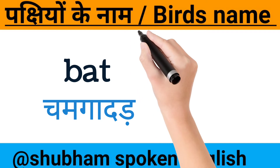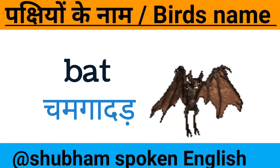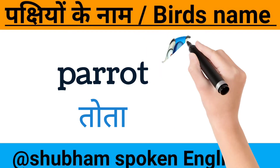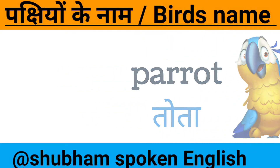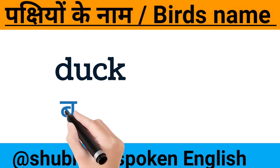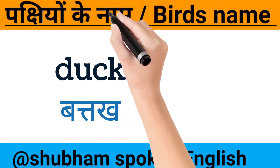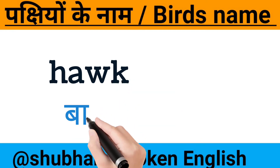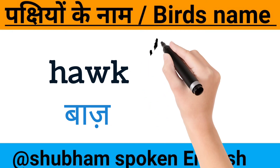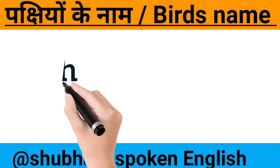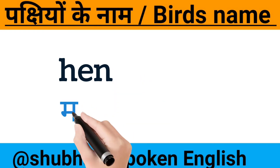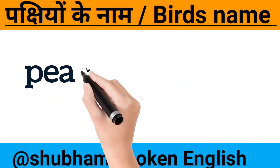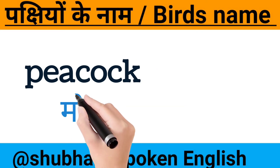Bat — chamgadar. Parrot — parrot. Duck — batak. Hawk — baaj. Hen — murgi. Peacock — peacock.